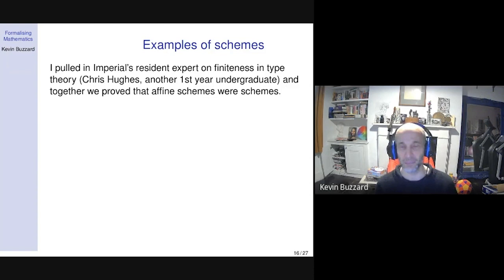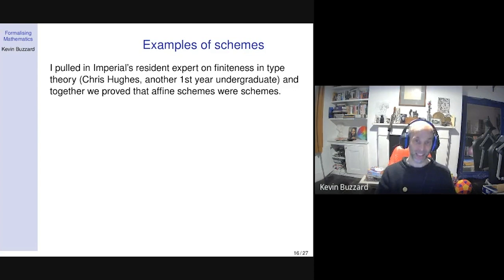Johan Commelin was a postdoc number theorist — he could actually understand what I'd done. He was the first person to come along and actually read my code. He read my code and pointed out I had the definition wrong. We hadn't discovered this because I hadn't used it to prove any theorems. Now there's egg on my face — I'd been telling people we don't need to check my definition, and it turns out we do. So we had to prove a theorem. There are certain kinds of schemes called affine schemes. We constructed these objects, and proved the theorem that affine schemes are schemes.